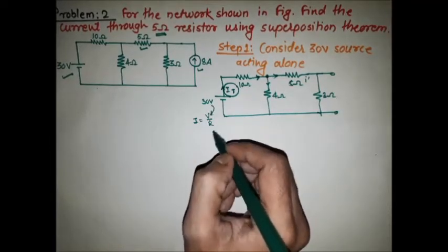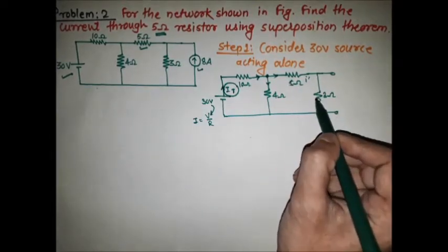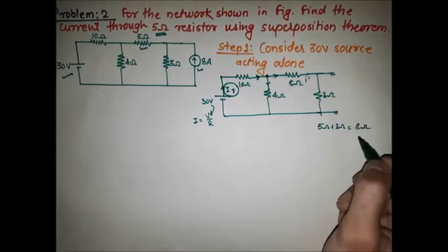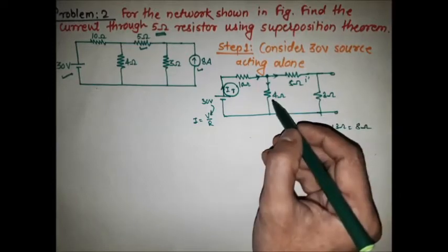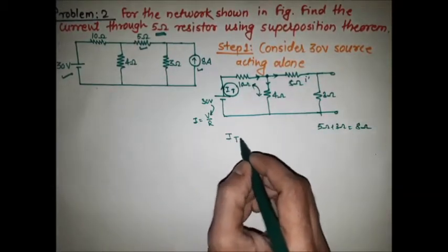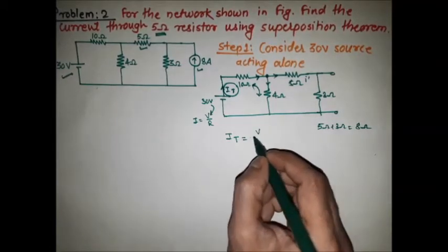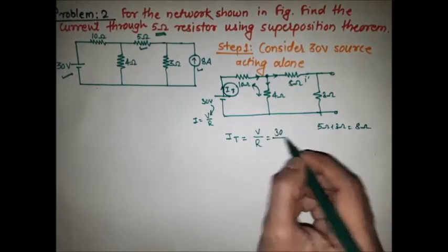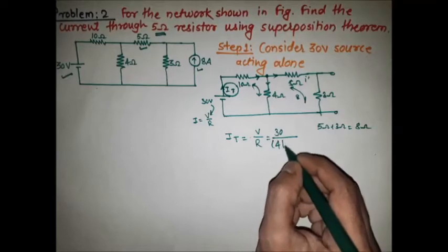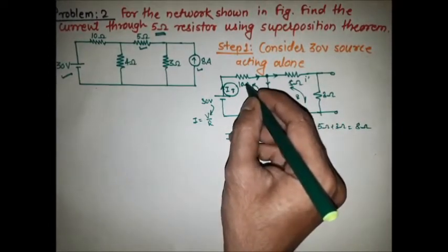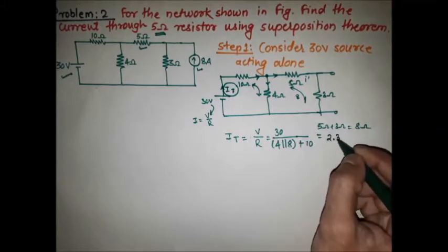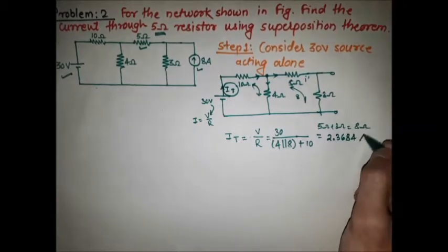The total voltage is 30V. The 5 ohm and 3 ohm are in series, giving 8 ohm. This 8 ohm is in parallel with 4 ohm, and that parallel combination is in series with 10 ohm. So total current IT = 30V divided by (4 parallel with 8, plus 10), which gives IT = 2.3684 amperes.